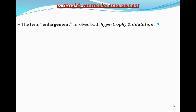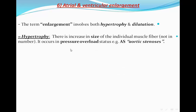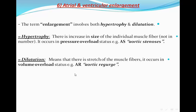Now we're going to speak about chamber enlargement — how to define chamber enlargement in the ECG. The term enlargement involves both hypertrophy and dilatation. In hypertrophy, there is an increase in the size of the individual muscle fibers, not in number; it occurs in pressure overload status like aortic stenosis. Dilatation means there is a stretch of the muscle fibers occurring in volume overload, like aortic regurgitation.